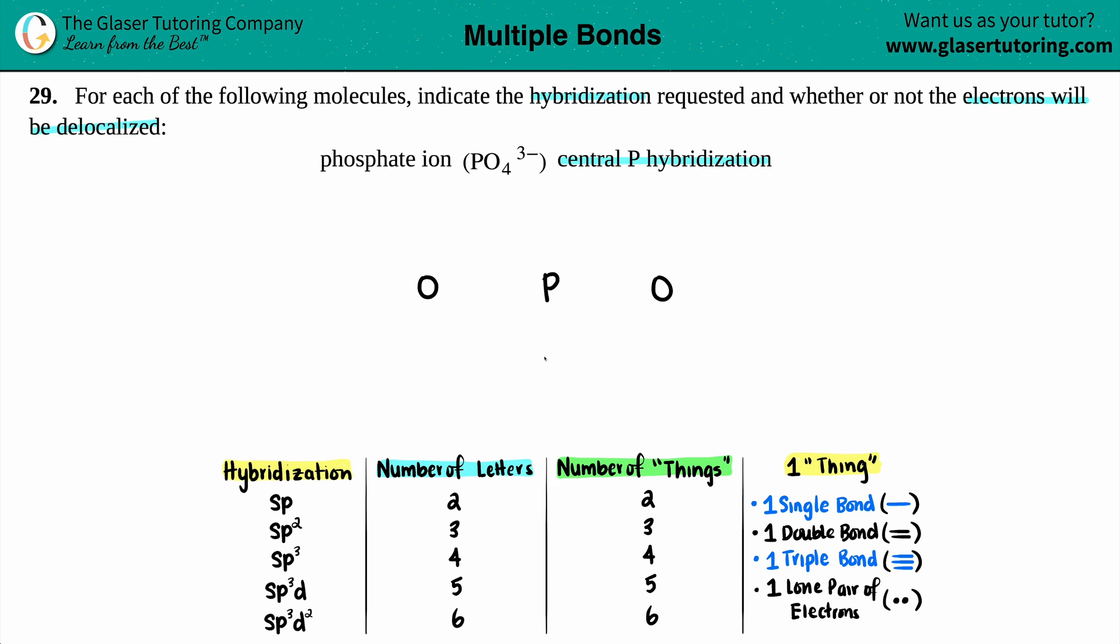So let's just draw that out. One, two, three, four. Now let's draw the Lewis, not the Lewis, we're doing the Lewis structure. Let's draw the valence electrons. Now around each oxygen,